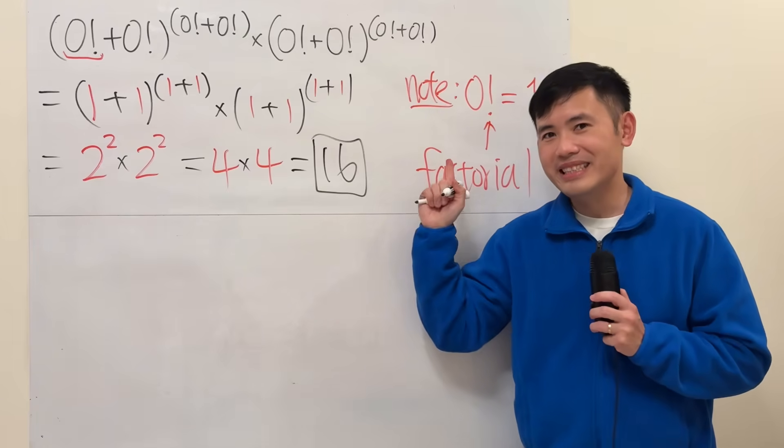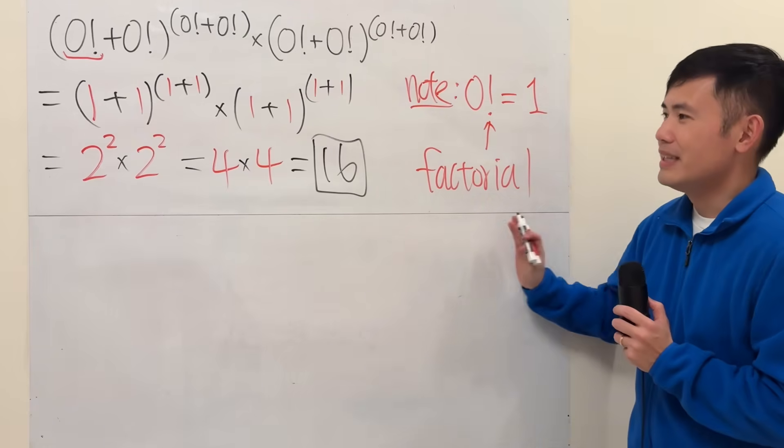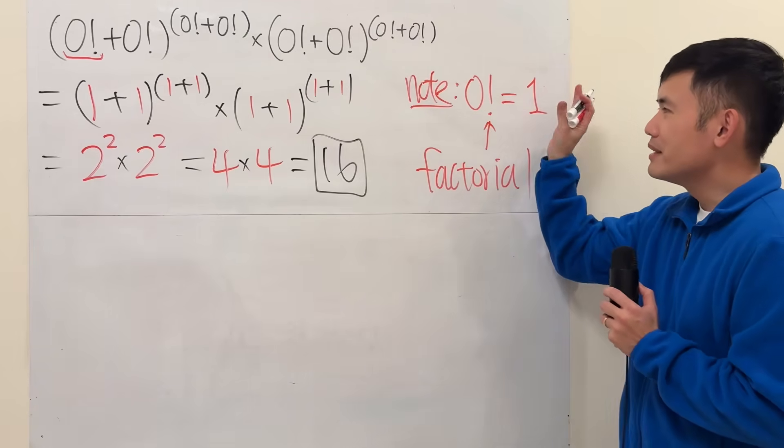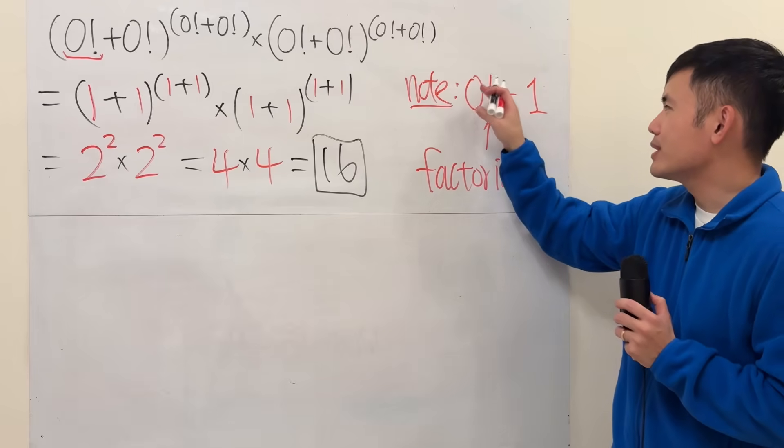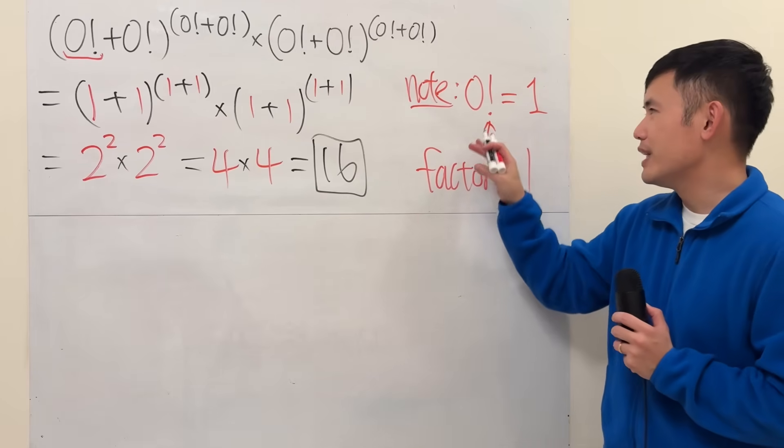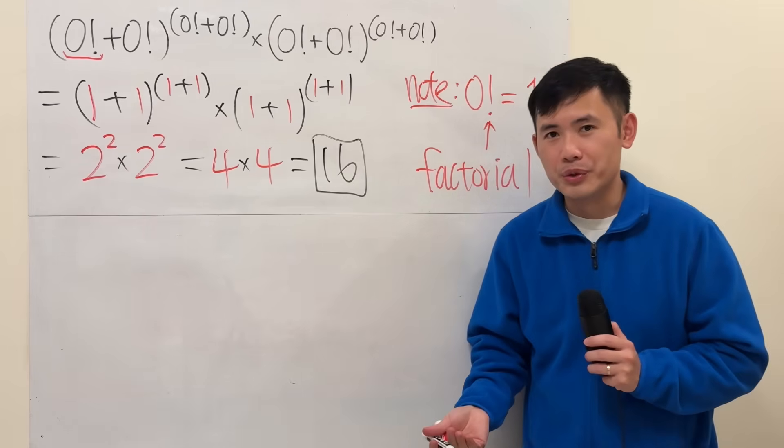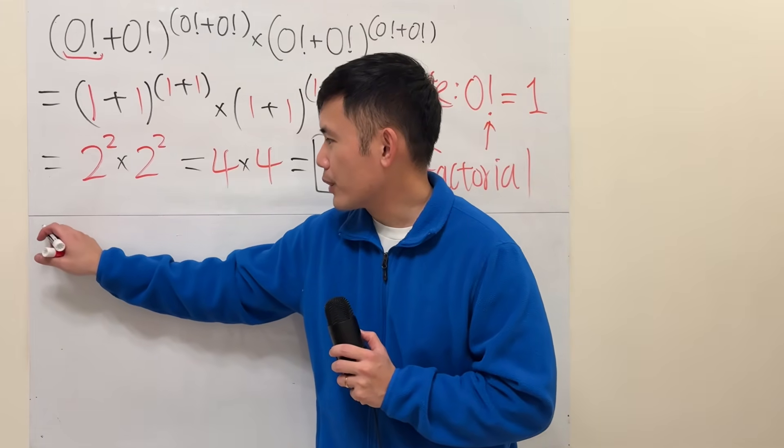So this is indeed correct. Now the question is: why is this one and what's the factorial thing? What if we don't have zero factorial? How exactly do we do it?